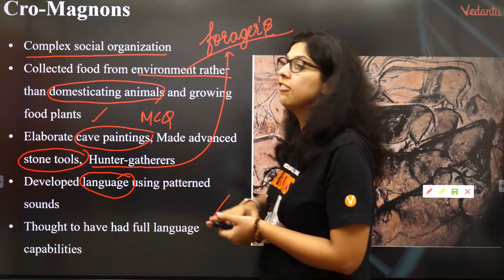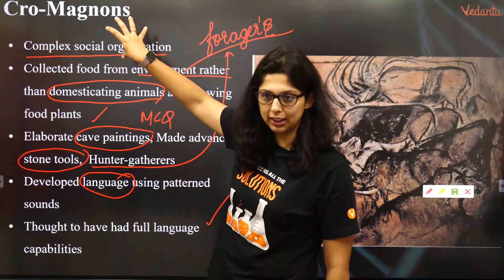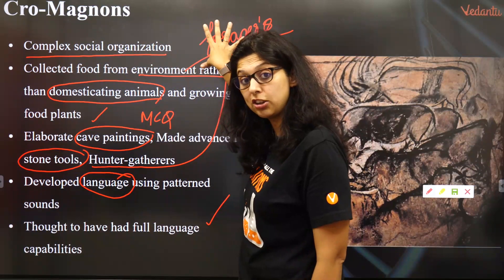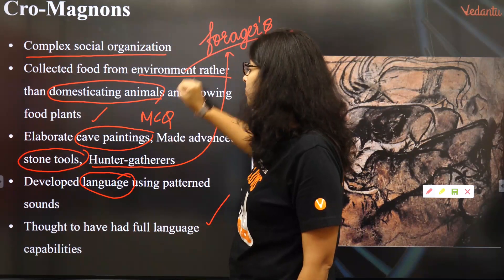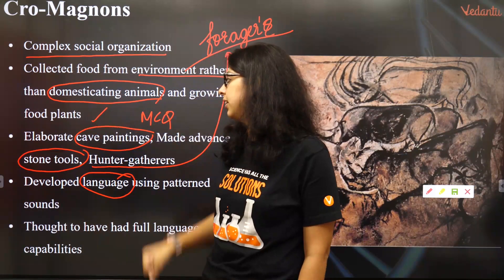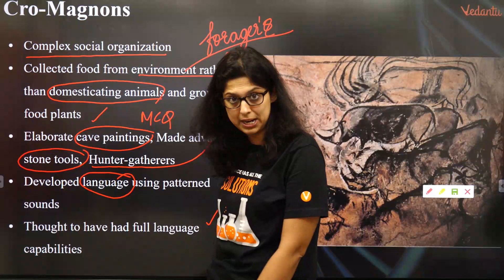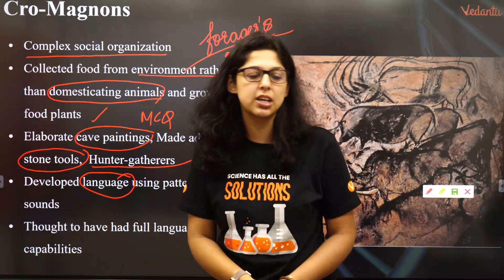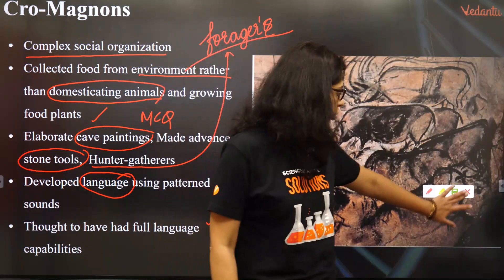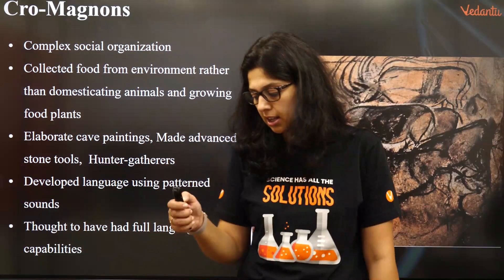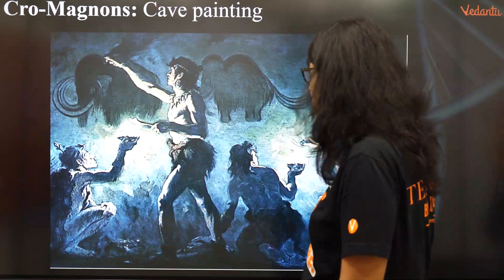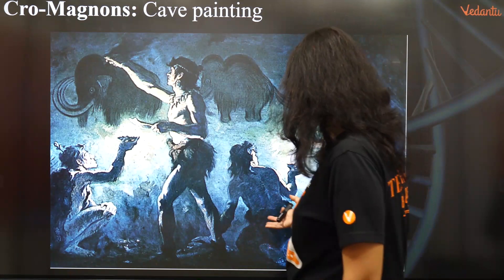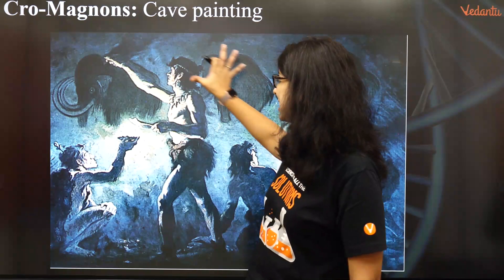So to recap: Cro-Magnons had a very complex hierarchical social organization. They were foragers and hunter-gatherers. They made very elaborate cave paintings, stone tools, and used language. I'm going to show you a photograph of Cro-Magnons — see how they are making these very elaborate paintings. Is that clear?